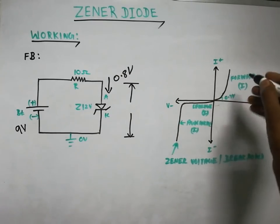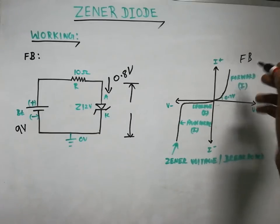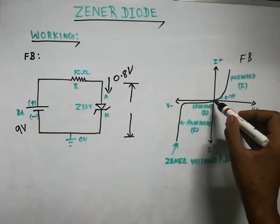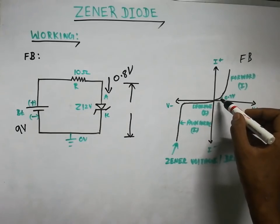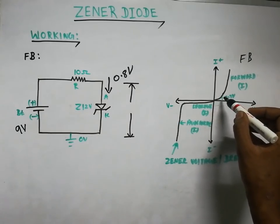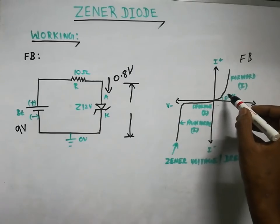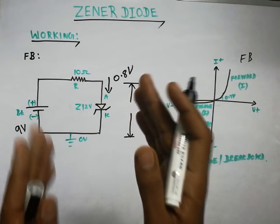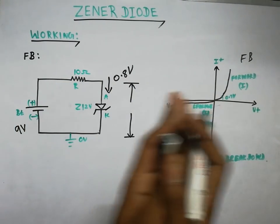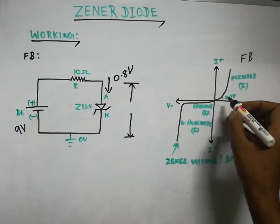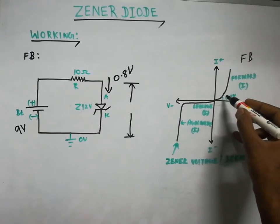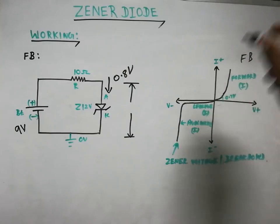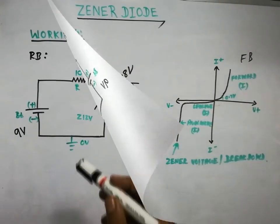Now looking at the forward bias VI curve: initially at 0 volts there is no reaction. As voltage increases from 0 to 0.5 volts there is no current. At around 0.8 volts the depletion region breaks down and current starts to increase rapidly.